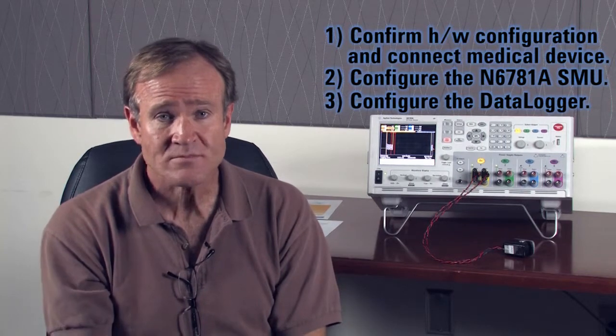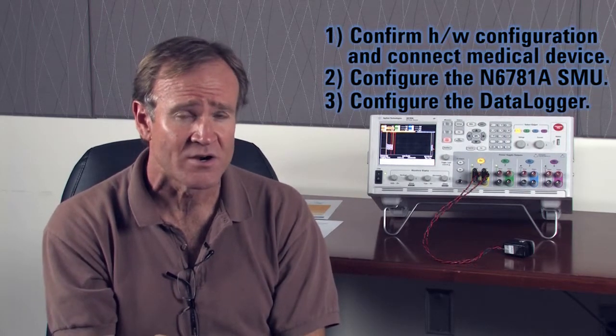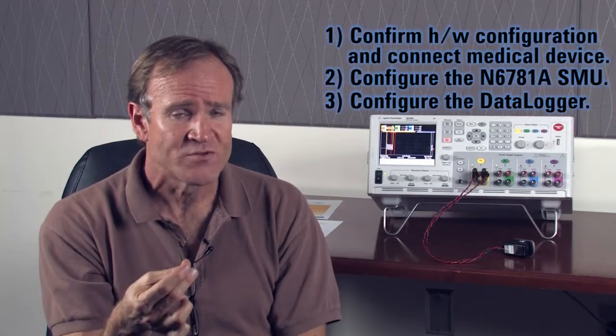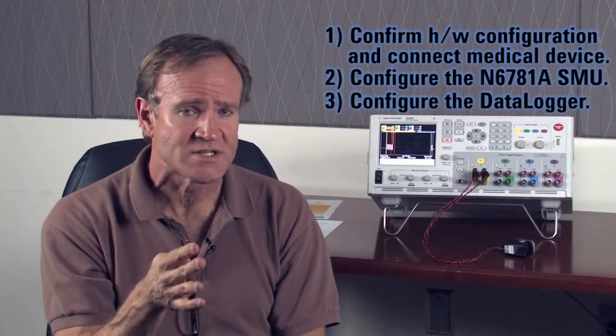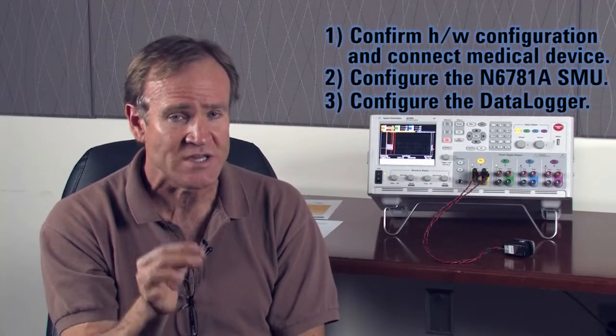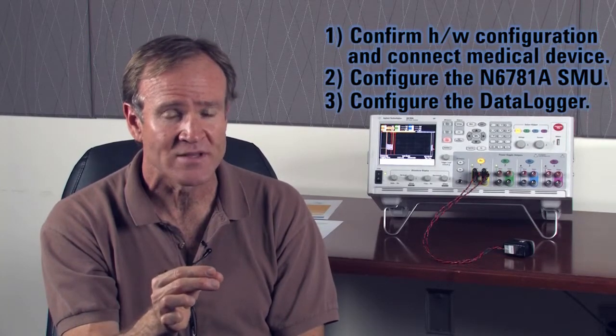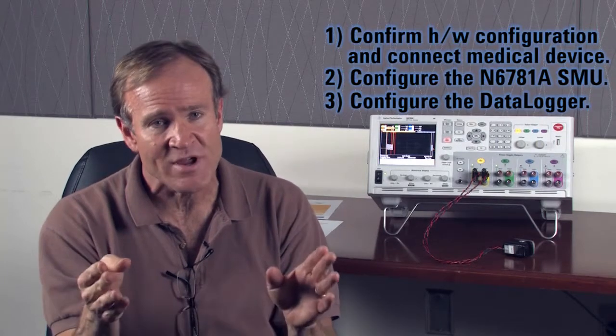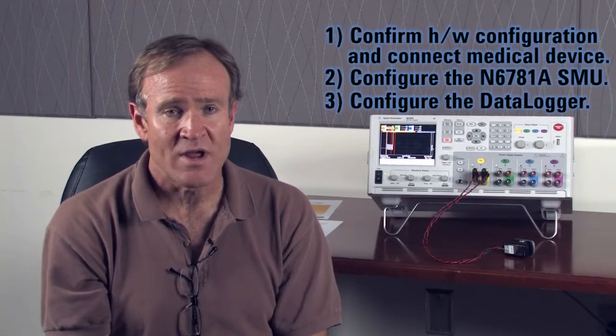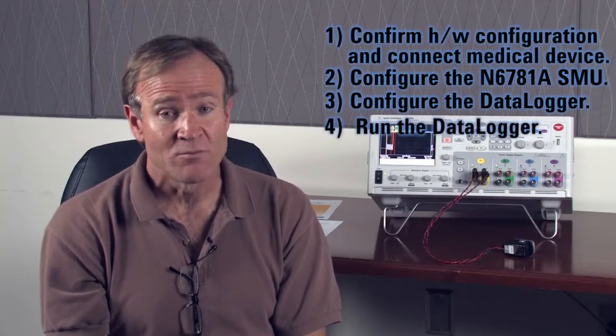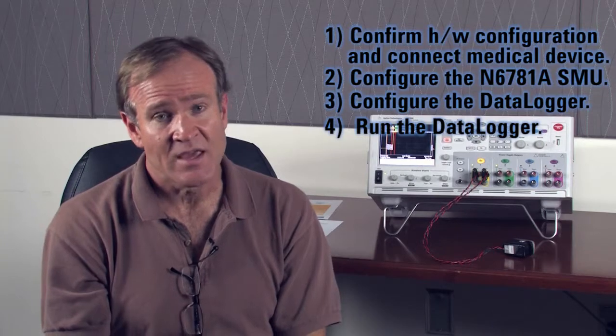Step three: configuring the data logger. So when you're configuring the data logger, you're going to need to set that auto range for your current. Remember, this is what sets the seamless ranging, so setting that auto ranging is key to getting the measurement to work correctly. And then of course you want to set the appropriate time frame and sample rate that you're looking for.